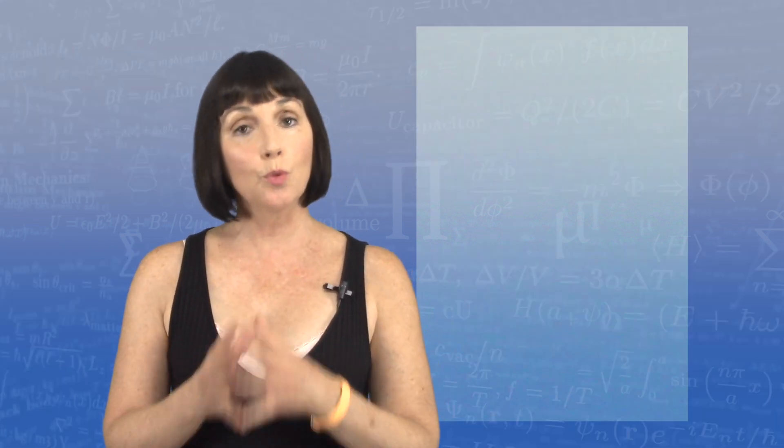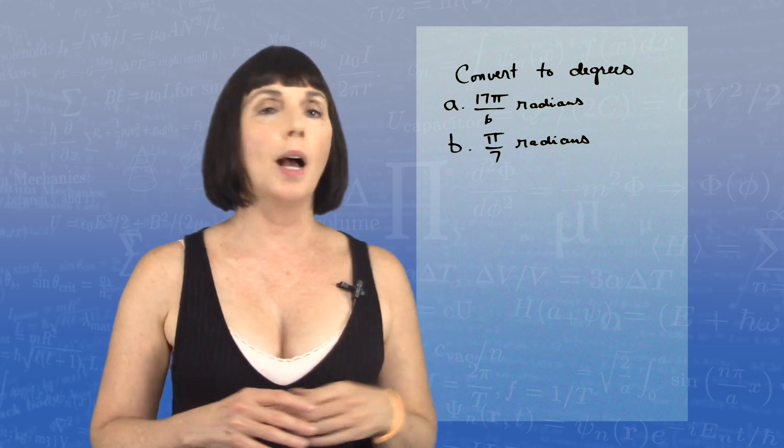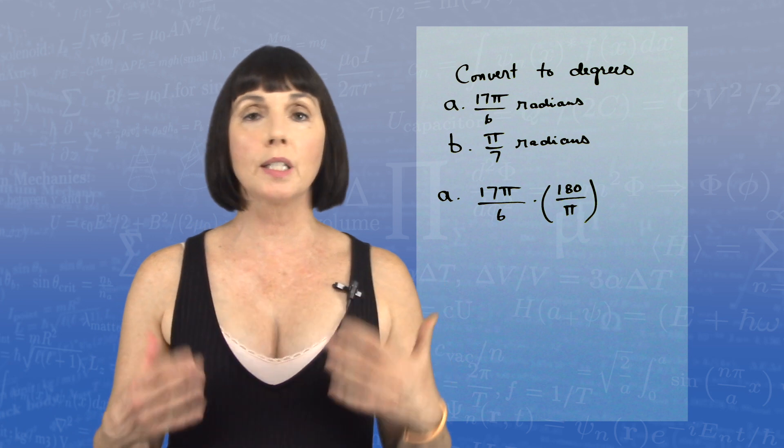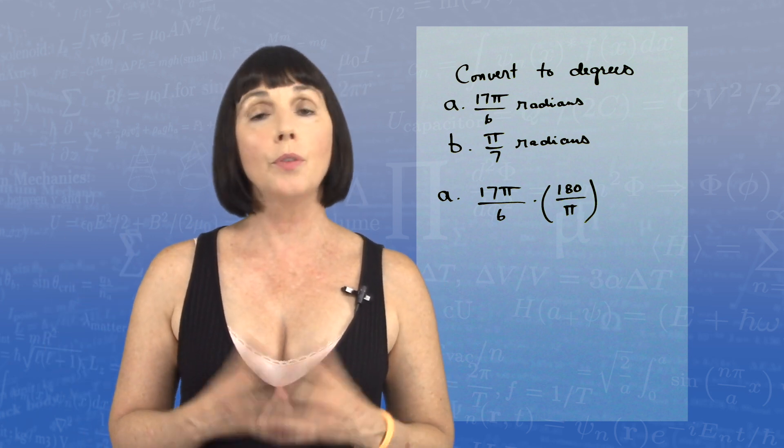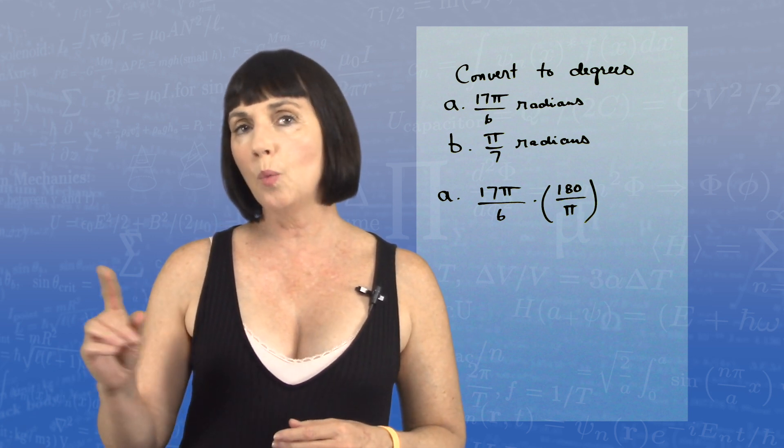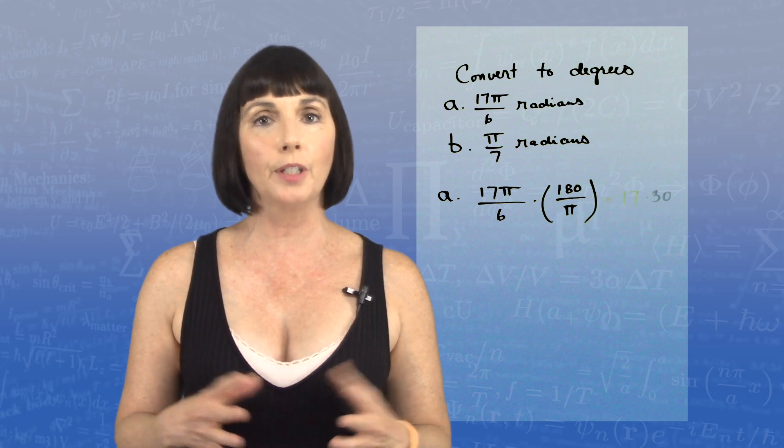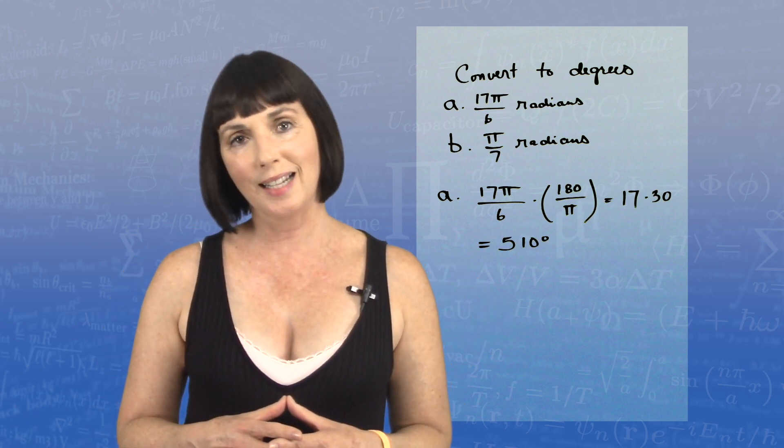Let's convert these radian measures to degrees. We're starting with 17 pi over 6. Now I'm going to multiply 17 pi over 6 times 180 over pi. That's my conversion factor. Those pi's will cancel out. And I can reduce that 180 on the top with the 6 on the bottom, and that gives me 30. So I get 17 times 30, which is equal to 510 degrees.